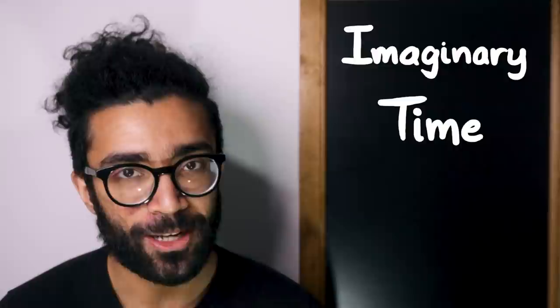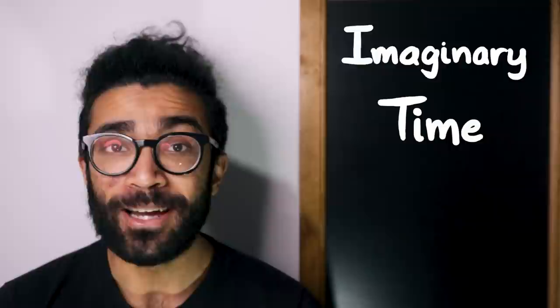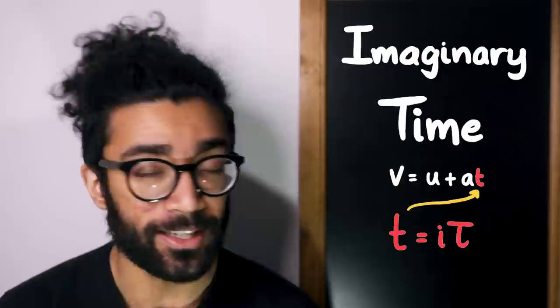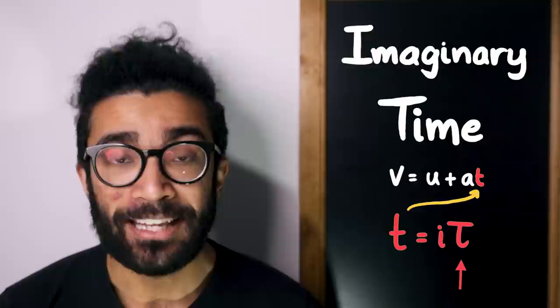As you may have guessed, imaginary time has nothing to do with our imaginations and everything to do with imaginary numbers, the ones that we've just discussed. Imaginary time, at its core, is a pretty basic idea. If we see a variable representing time in any of our mathematical calculations, we can replace it with this instead. The imaginary number i multiplied by tau. In other words, we're replacing something, usually real, with something imaginary now.